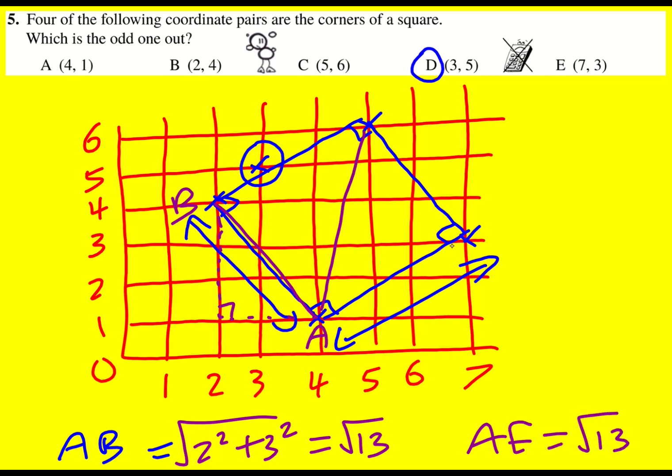And from that, you know, you could work out where the lengths of the square are, and ultimately you could reject D.